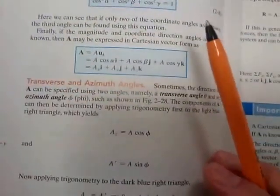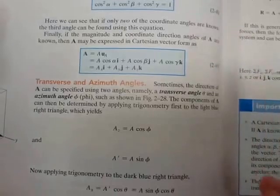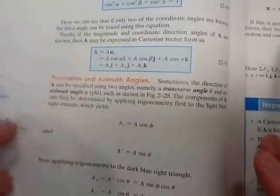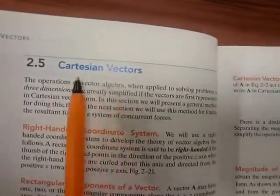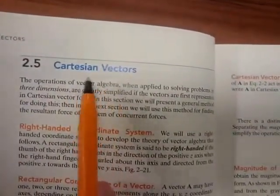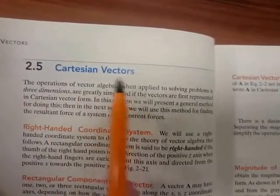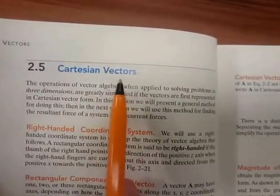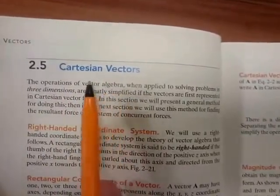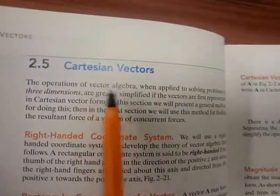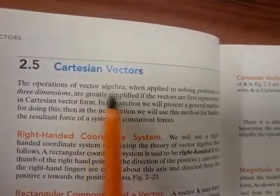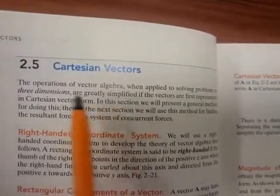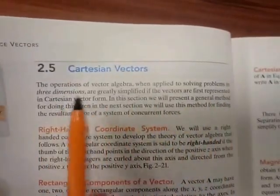Just remember what we are actually trying to do — the chapter tells us: we are trying to convert force vectors into Cartesian vector form. That's because it simply makes our vector algebra much simpler when we have forces in three dimensions.